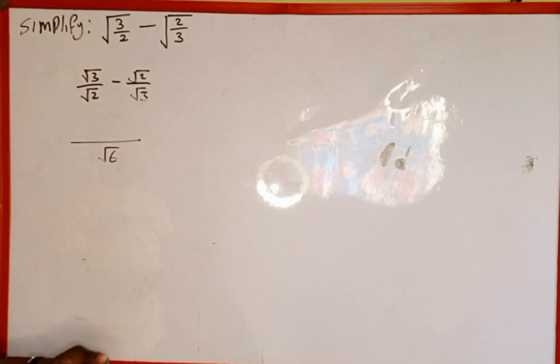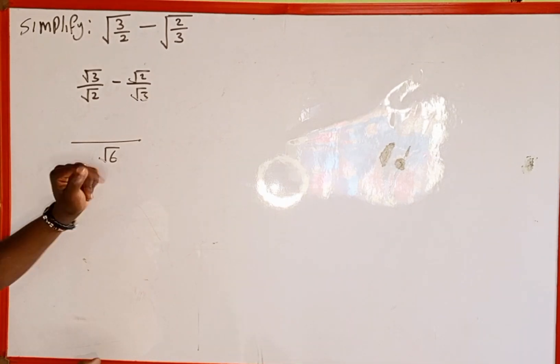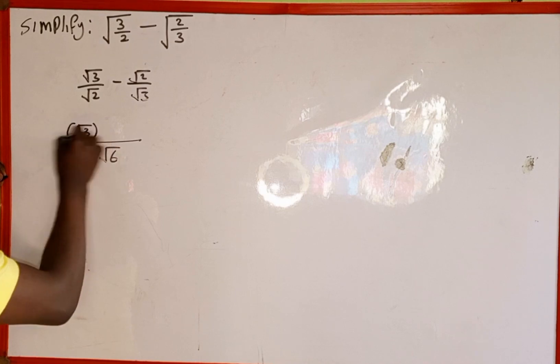Then we rule a division line. Now we are going to divide. √6 divided by √2 is going to give us √3. Then √3 multiplied by √3 is going to give us (√3)².